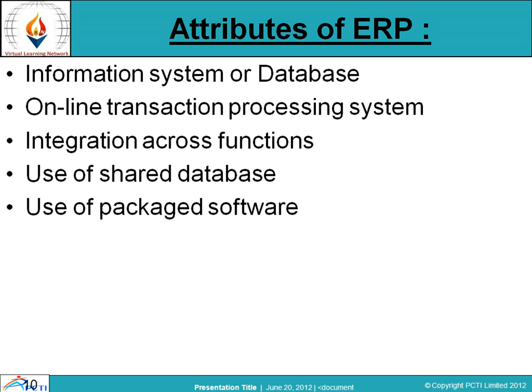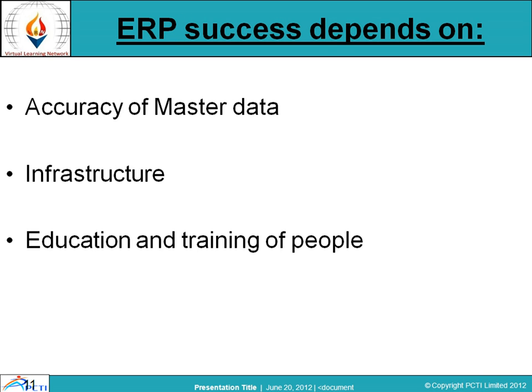ERP also allows the usage of shared databases and packaged software. What makes ERP successful basically depends on three important parameters. First is Accuracy of Data — when we talk about data, it means master data, which is data that does not keep on changing. Second is Infrastructure. And the last is Education and Training of people — those who are going to use this software must be educated, well-versed, and given training beforehand so that ERP can be utilized in a fully-fledged manner.